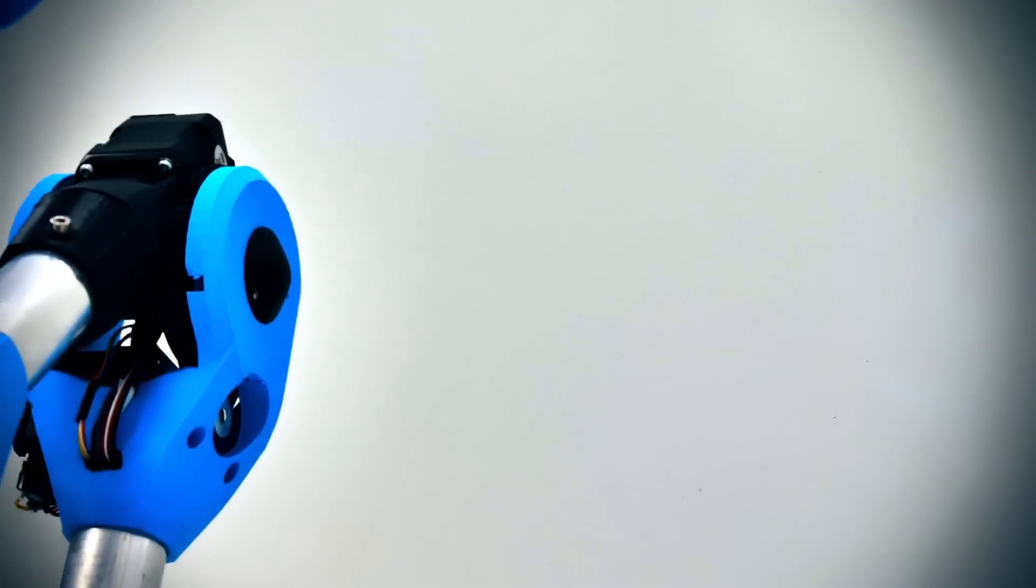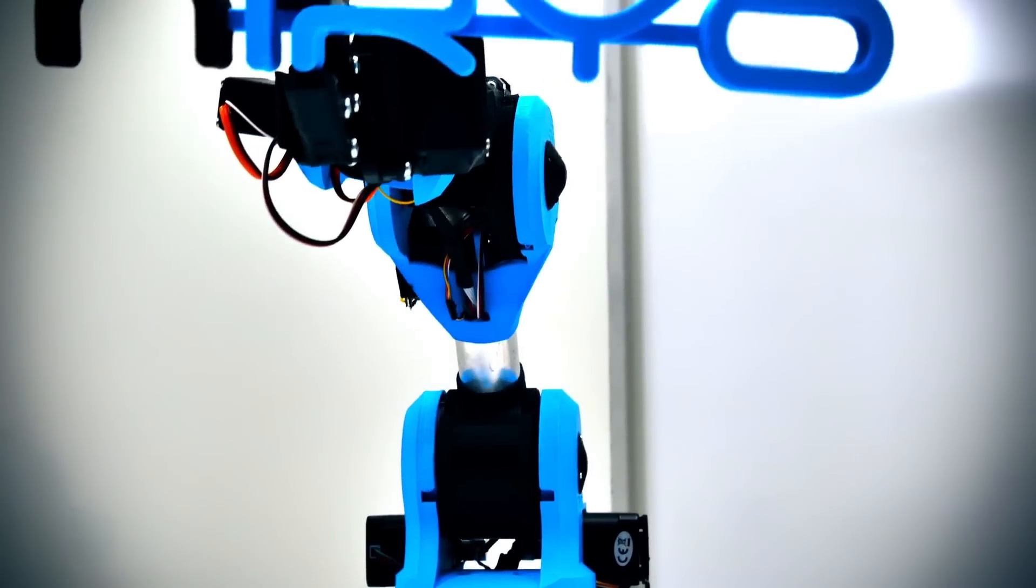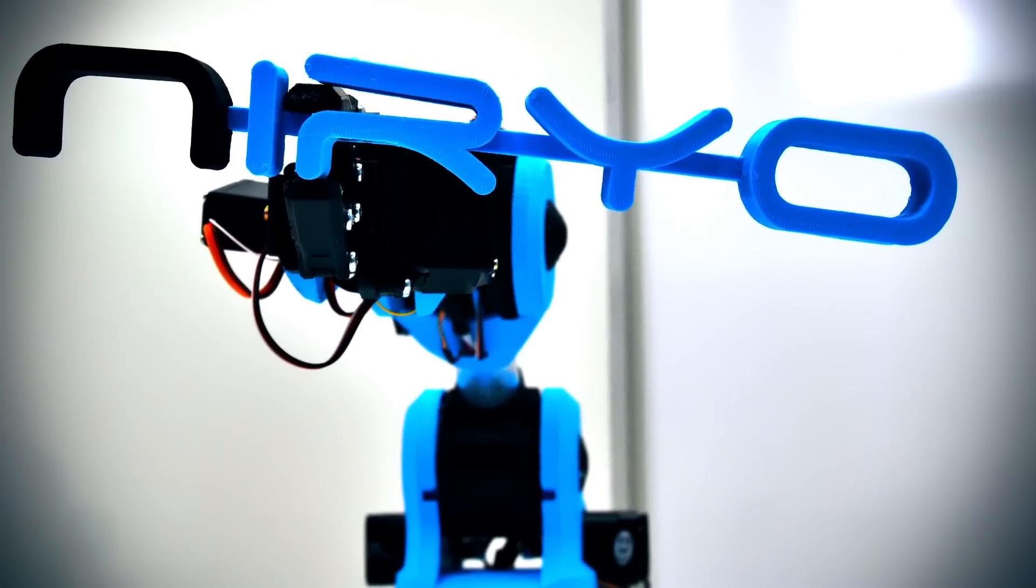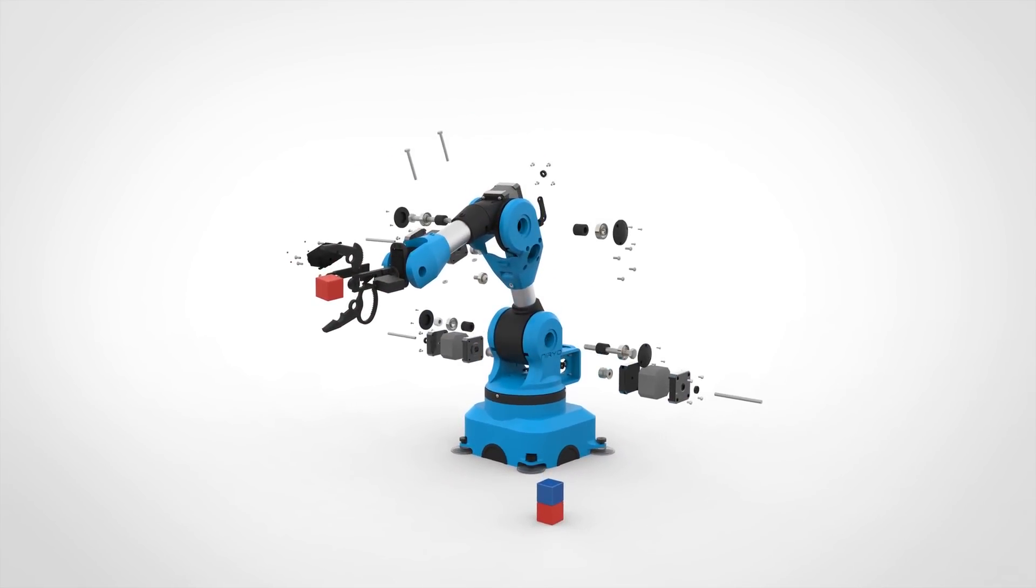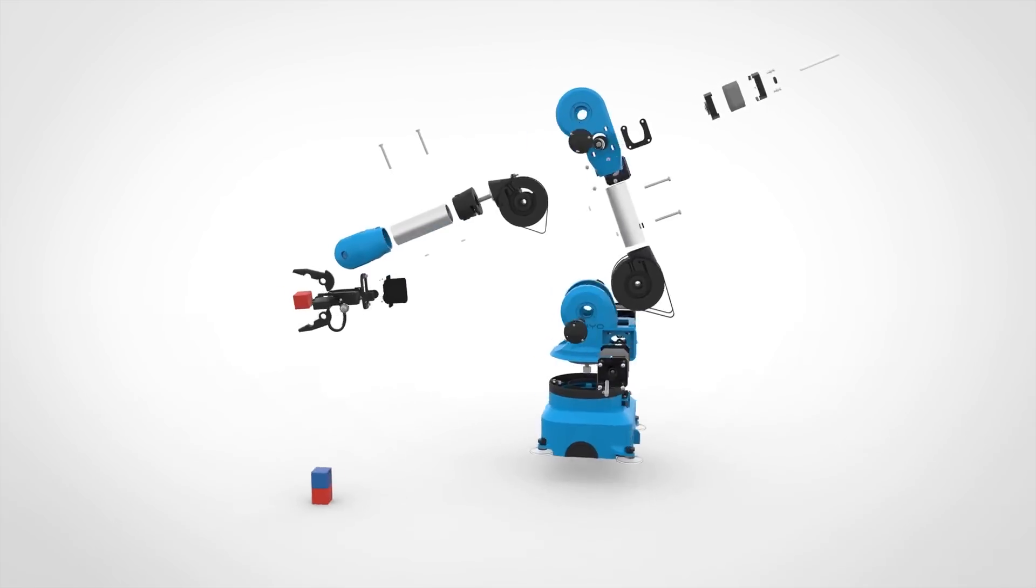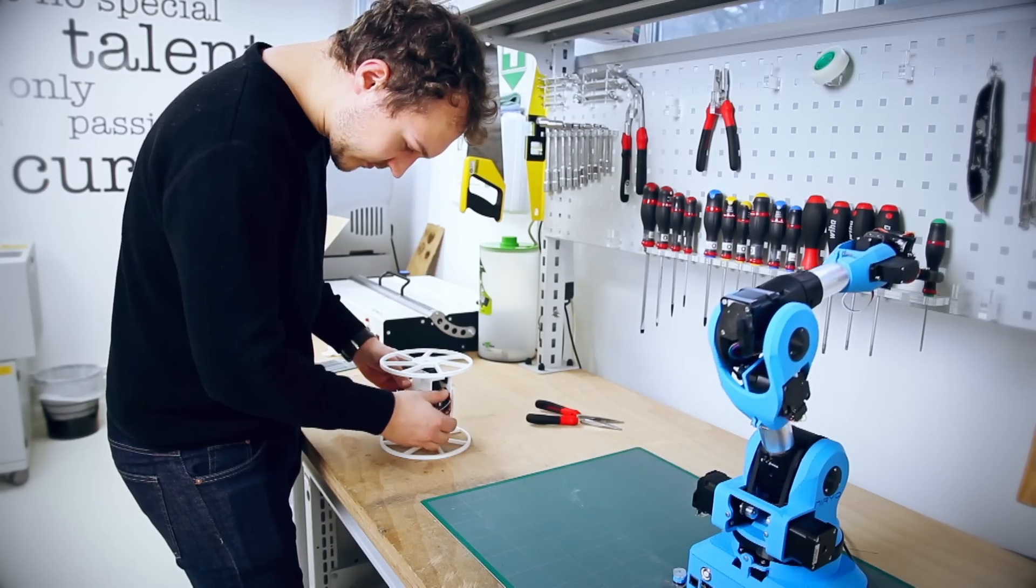Meet NIRYO 1, the first accessible 6-axis robotic arm. NIRYO 1 is a low-cost and user-friendly robot made out of 3D printing and open-source technologies. It was created so everyone can use it.